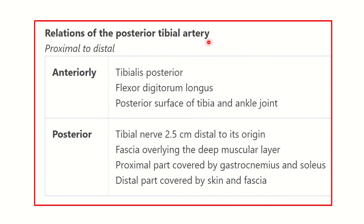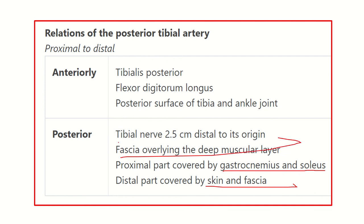Looking at the relations of the posterior tibial artery: anteriorly lie the flexor digitorum longus and the posterior surface of the tibia and ankle joint — these lie in the posterior compartment. Posteriorly lie the tibial nerve, the fascia overlying the deep muscles, and proximally the gastrocnemius and soleus muscles, skin, and fascia.